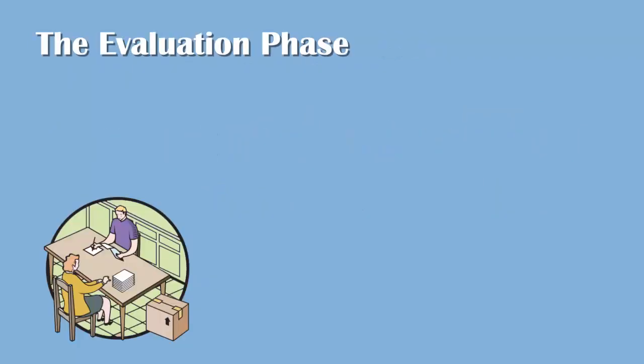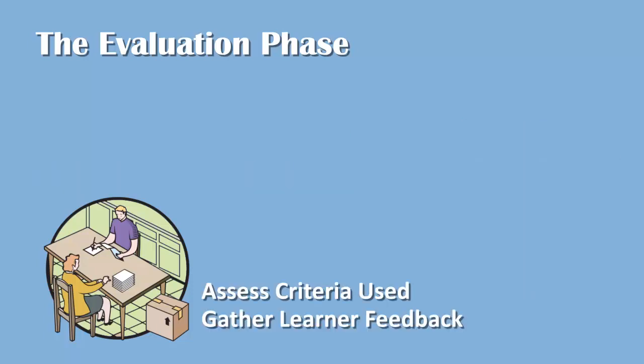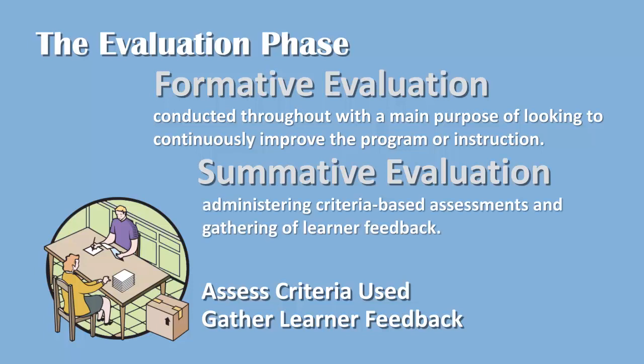During the final and fifth phase, the evaluation phase, the designer assesses criteria used and gathers learner feedback. There are two types of evaluation that are conducted during this phase: formative evaluations and summative evaluations. Formative evaluations are conducted throughout with the main purpose of looking to continuously improve the program or instruction. Summative evaluation, in contrast, consists of administering criteria-based assessments and gathering of learner feedback.